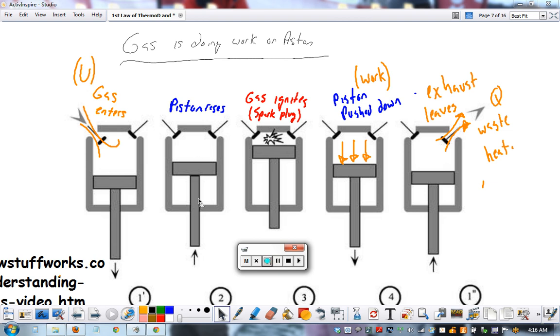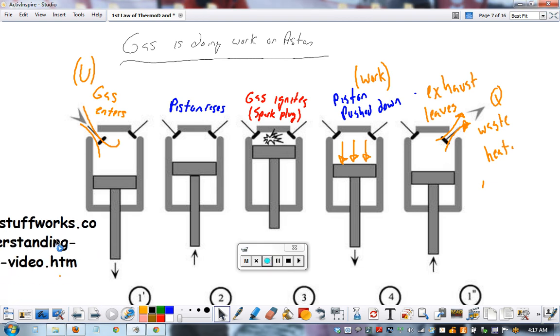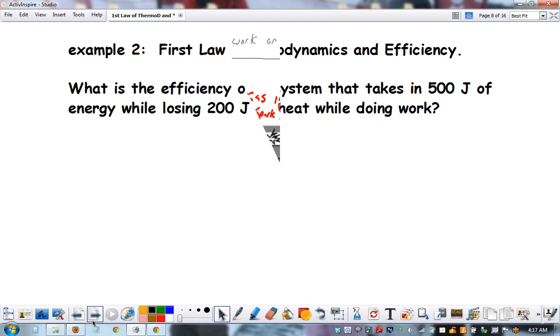These things go up and down and they turn the crankshaft that turns your wheels. The gas ignites by a spark plug, which does work and pushes down the piston. And then the exhaust or waved heat leaves. That's our Q. So these two have to equal this one. So draw this and have these parts kind of labeled like I do.